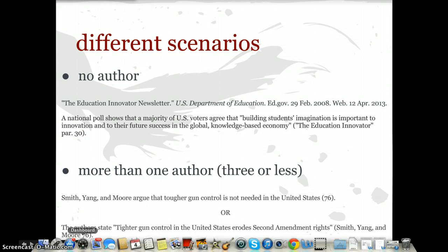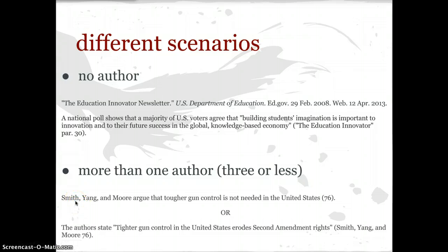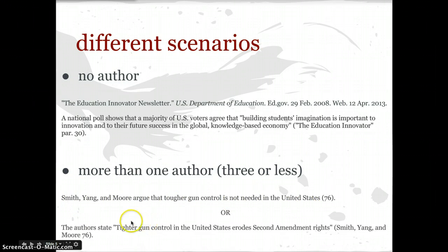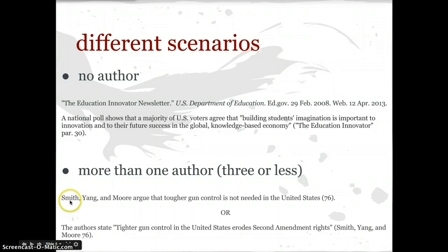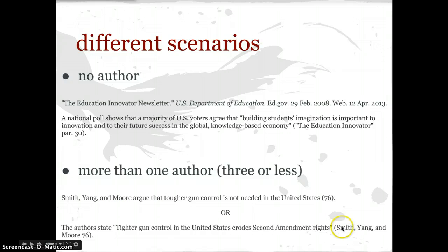More than one author — three or less — you include all last names. For example, from the OWL site: 'Smith, Yang, and More argue that tougher gun control is not needed in the United States.' Because we put all three last names in the sentence, Smith will be the first entry in the works cited page, and we only have to put the page number at the end. Here it is again in a different form with a quotation — this time without including the three authors in the sentence, so here they appear at the end in the parenthetical citation.